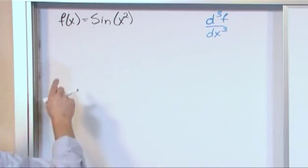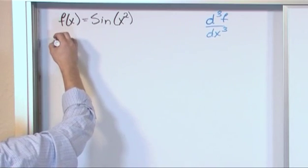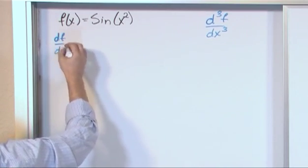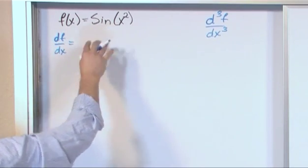So the first thing we need to do is find the first derivative. So we say df dx, that's the first derivative, is going to be the derivative of this function.